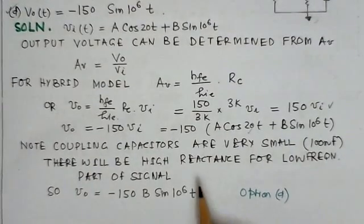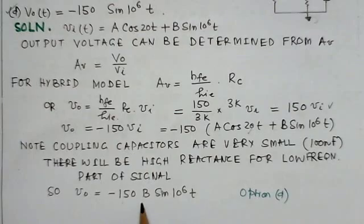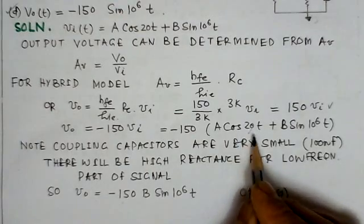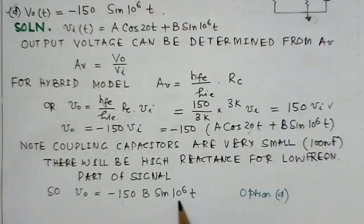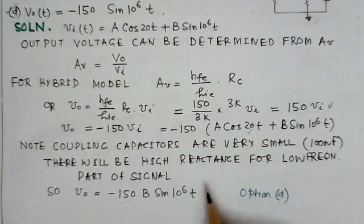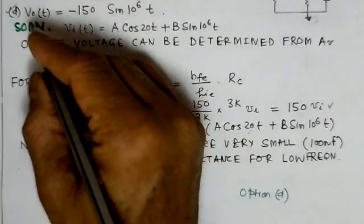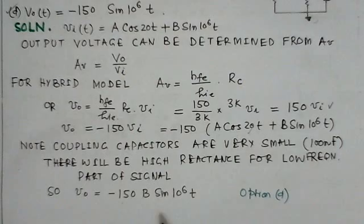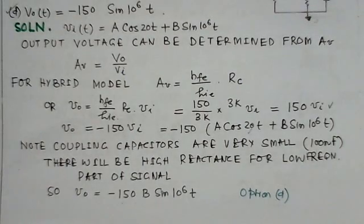We can only say that the output is -150 B sin(10^6 t). This being a very high frequency with ω = 10^6, this will appear in the output. The low frequency will not appear. So option D is the right choice: -150 B sin(10^6 t). Thank you.